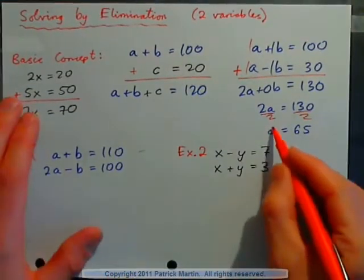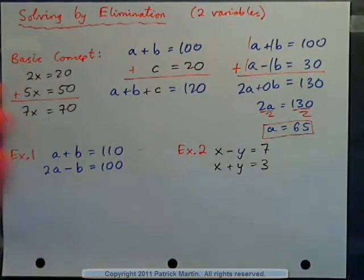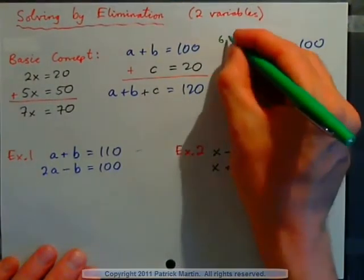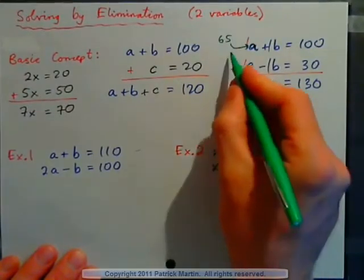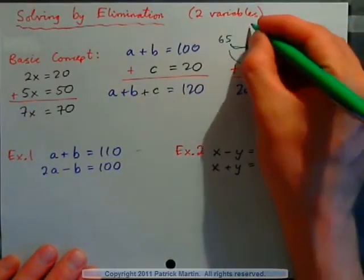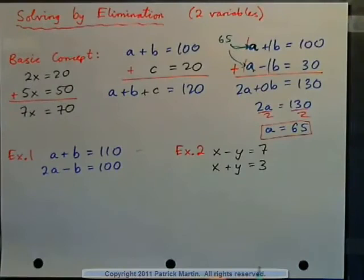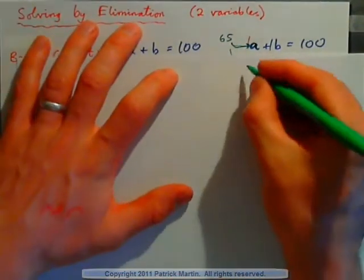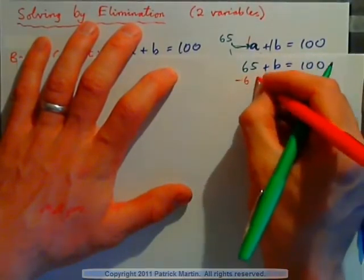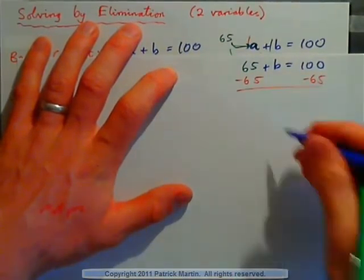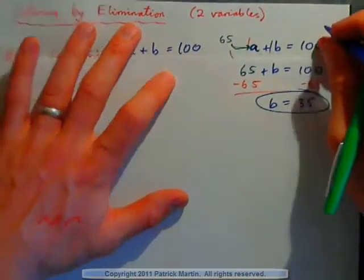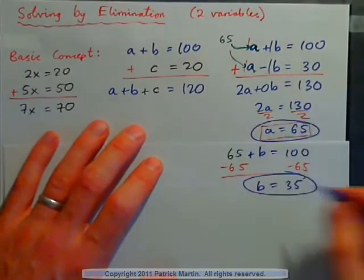Am I done? Is this the final answer? No, because I also have to find the price of the banana. So I can take the apple value of 65 and plug it in for a into the top equation. That gives me 65 plus B equals 100. All I need to do is subtract 65 from both sides, and I get B equals 35 cents. So banana is 35 cents and my apple was 65 cents. Now I have the answer.